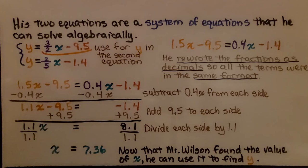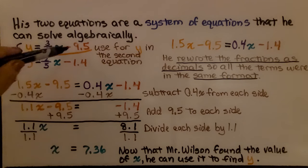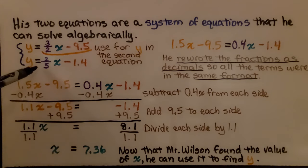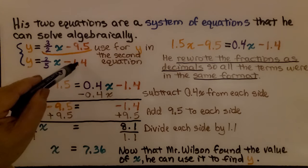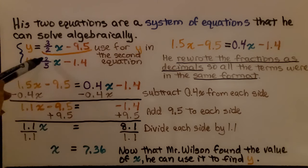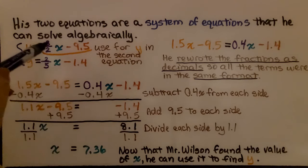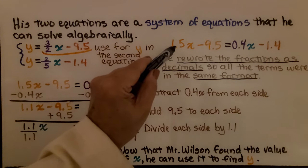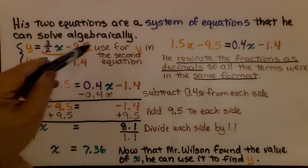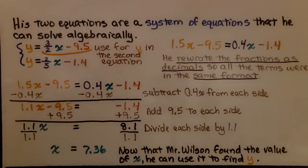His two equations are a system of equations that he can solve algebraically. We have our two equations. And since y equals this right side, we can use this entire expression, 3 halves x minus 9.5 for y, and we can plug it into this equation. Now, we have a fraction here and decimals here. Mr. Wilson wrote the fractions as decimals so all the terms were in the same format. You don't want to have them mixed. We've got 3 halves which is 1.5. And we set this side, 1.5x minus 9.5 as y in our equation. And 2 fifths equals 0.4. So we have 0.4x minus 1.4.